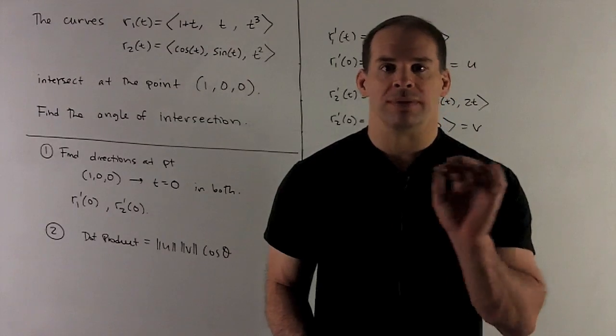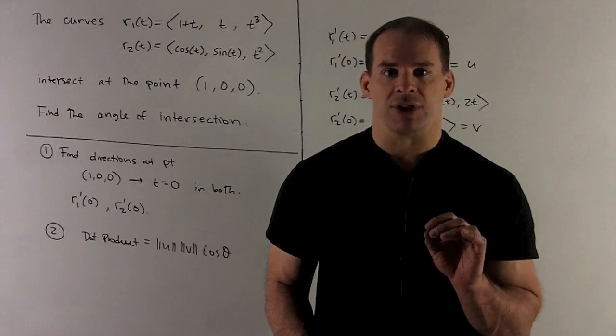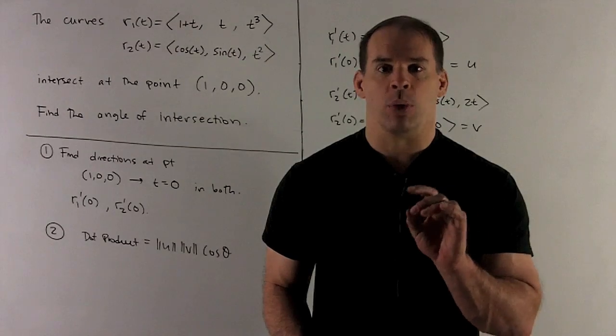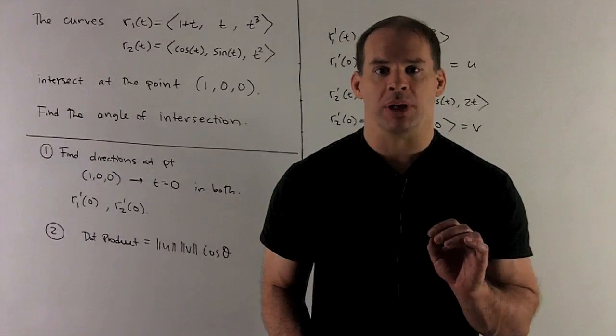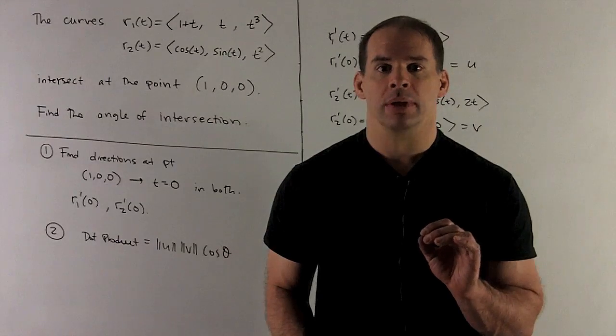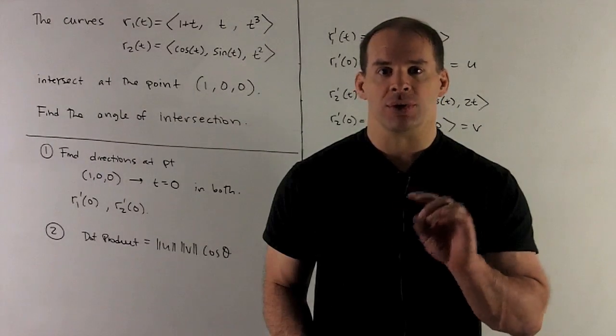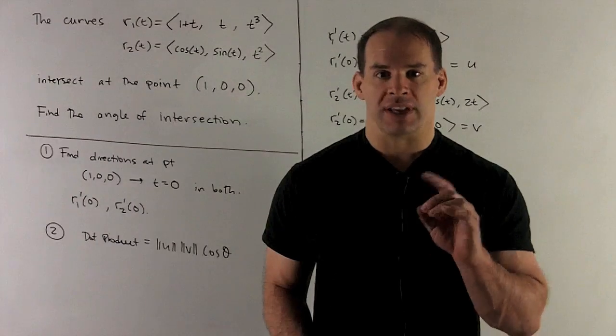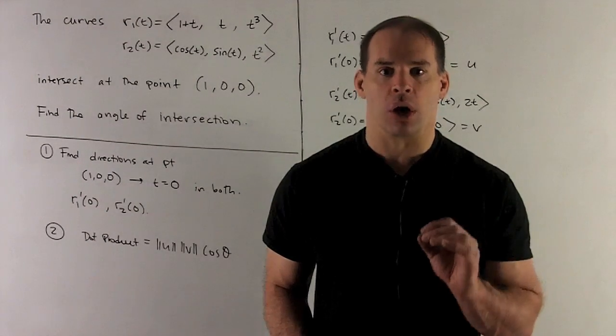Now, we need to do a few things before we get to our answer. First observation is, if I want to get the point (1, 0, 0) for either of my curves, we can get it by putting in t equals 0. In general, we might not have (1, 0, 0) coming out for the same parameter. Just a coincidence here, but it makes our work a lot easier.